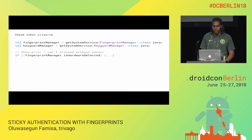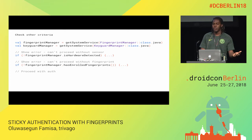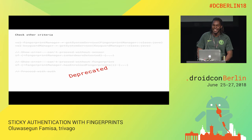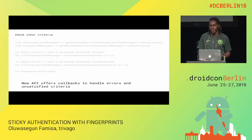Then normally you would check the other criteria — checking if there is a hardware sensor present in the device and if the user has enrolled fingerprints — then proceed with authentication if all of these criteria are met. But in Android P, these are all deprecated. Instead, there's an API to receive callbacks to handle these errors and exceptions in these cases.